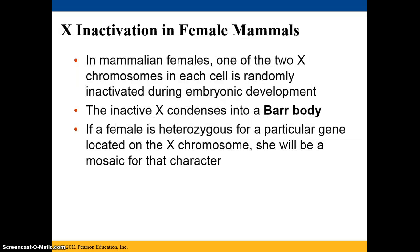In mammals, in females, one of the two X chromosomes is randomly inactivated during embryonic development. The inactivated X chromosome condenses into what is called a Barr body. If the female is heterozygous for a particular gene located on the X chromosome, she will be a mosaic for that character.